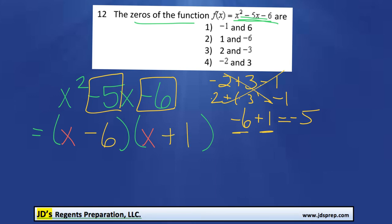And to find the zeros, we want to set this equation to be equal to 0. And what that means is we want x minus 6 to be equal to 0, or x plus 1 to be equal to 0.